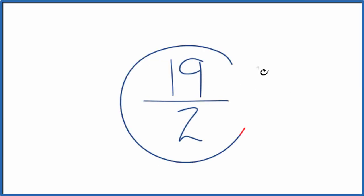Let's simplify the fraction 19 over 2, also called 19 halves. We're looking for another fraction that is equivalent. It has the same value as 19 over 2, it's just that we've reduced it or simplified it to its lowest terms.